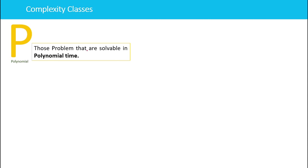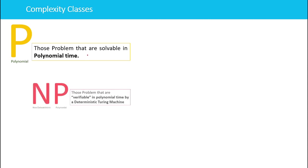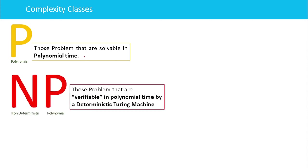Another class is called the NP class. NP stands for non-deterministic polynomial. NP problems are those problems that are verifiable in polynomial time by a deterministic machine or a deterministic algorithm.